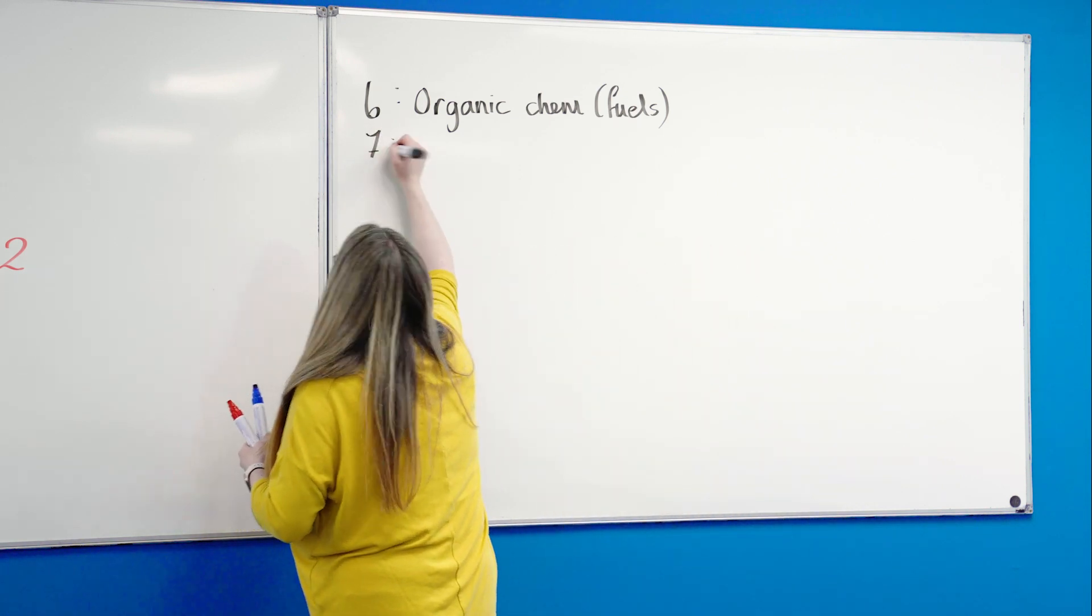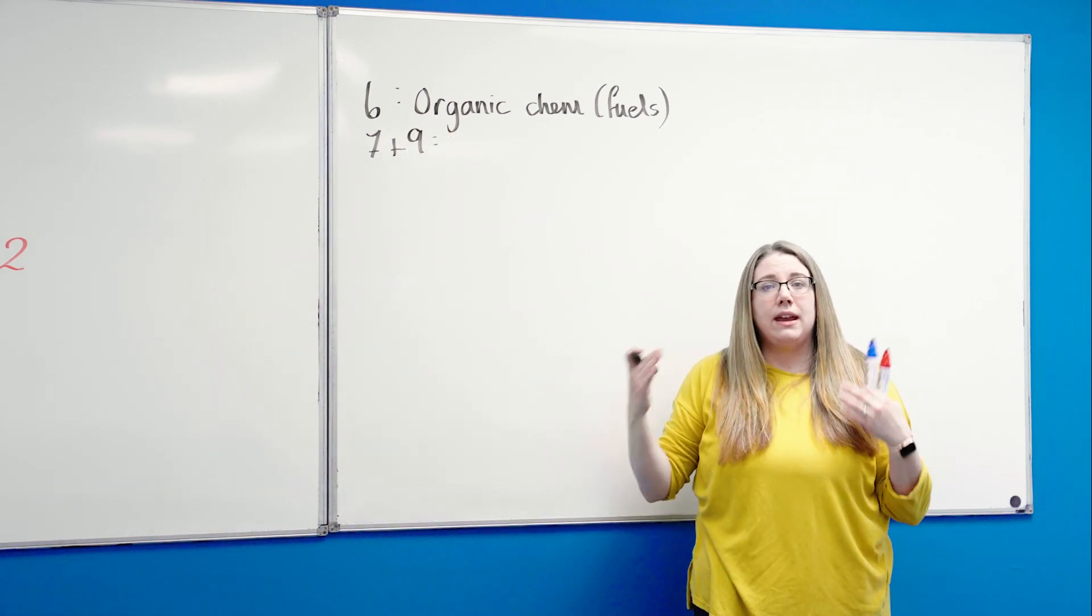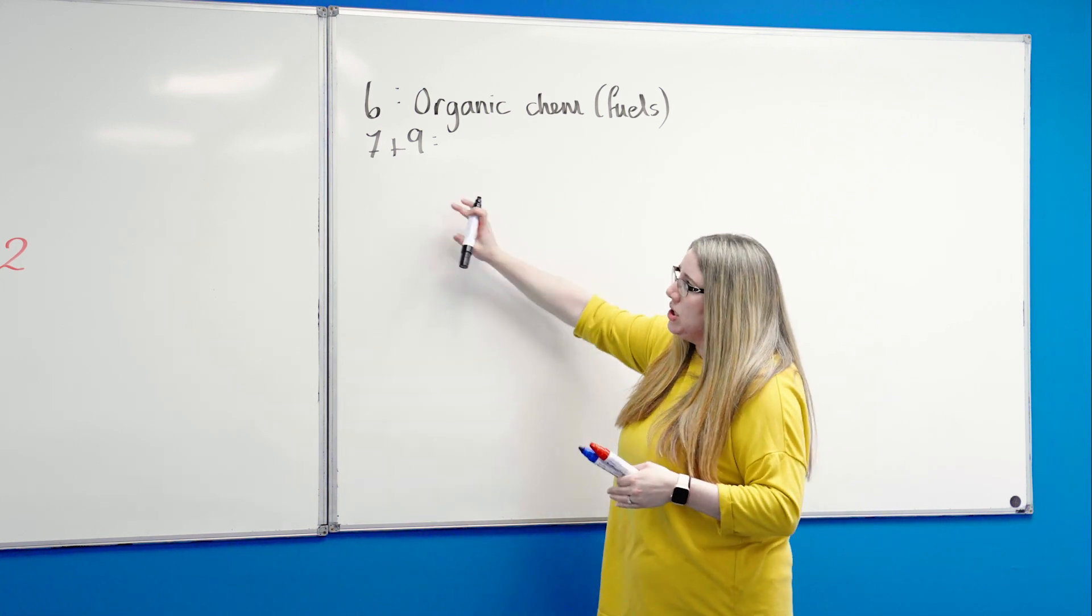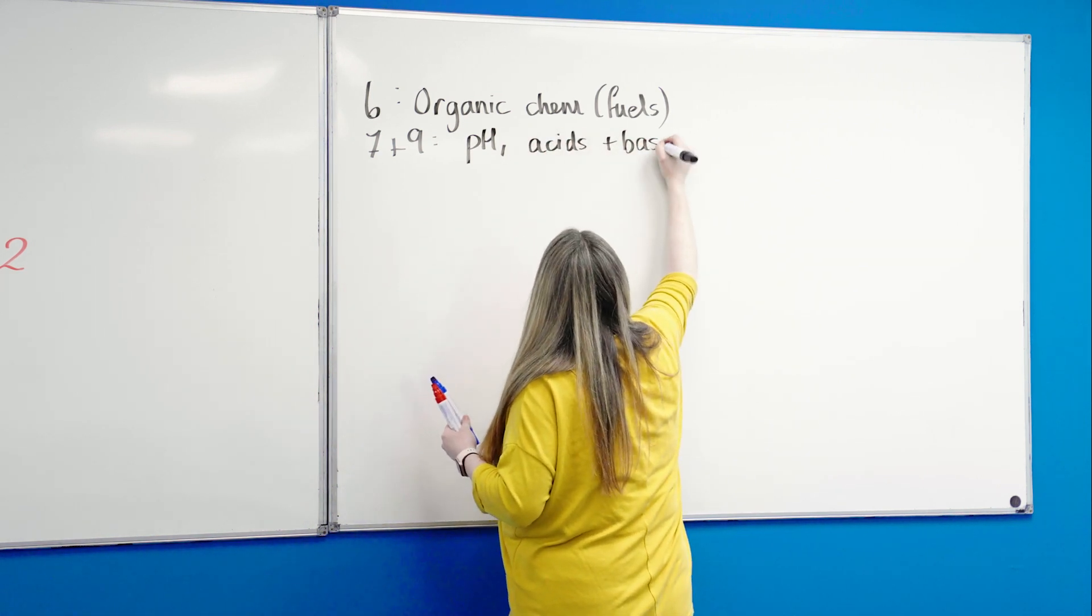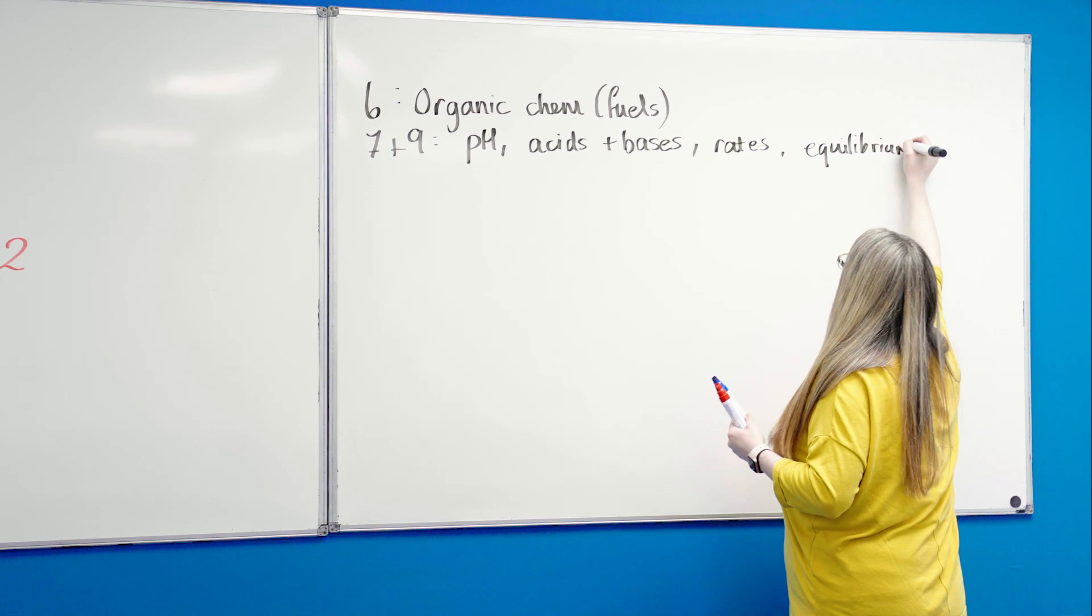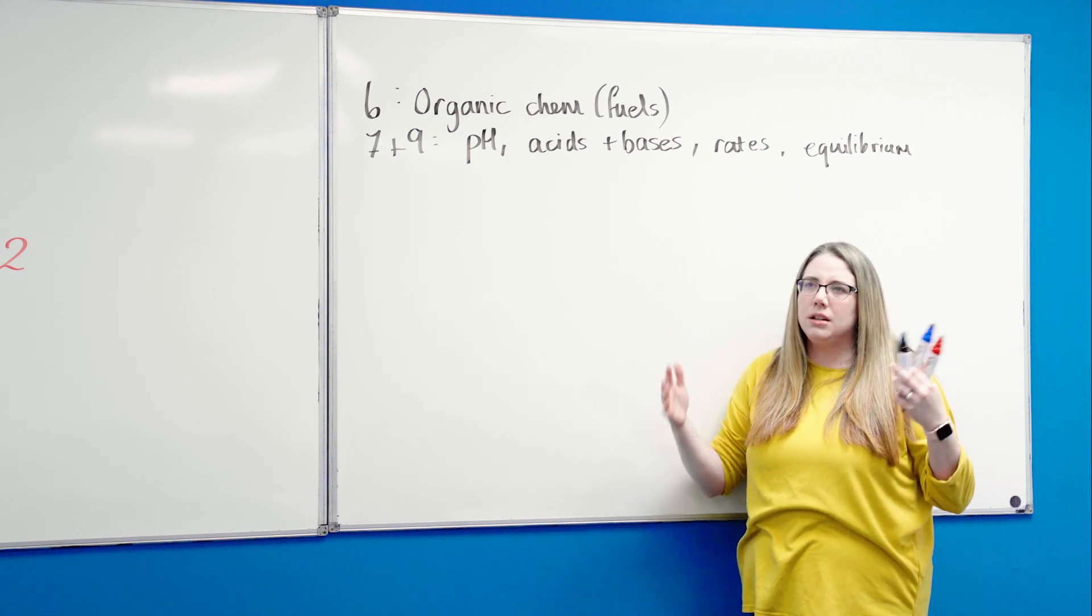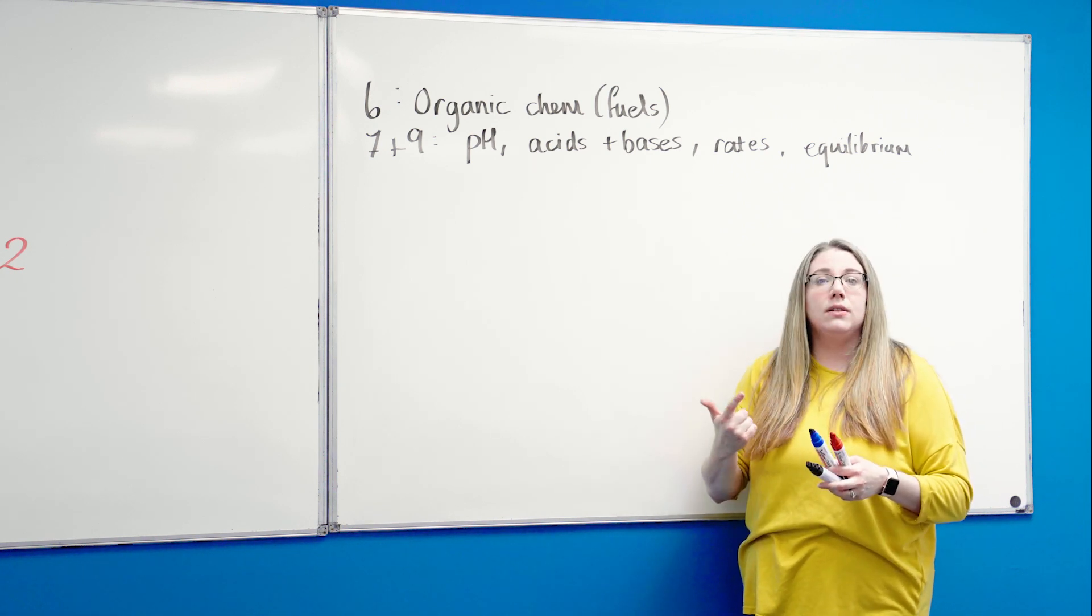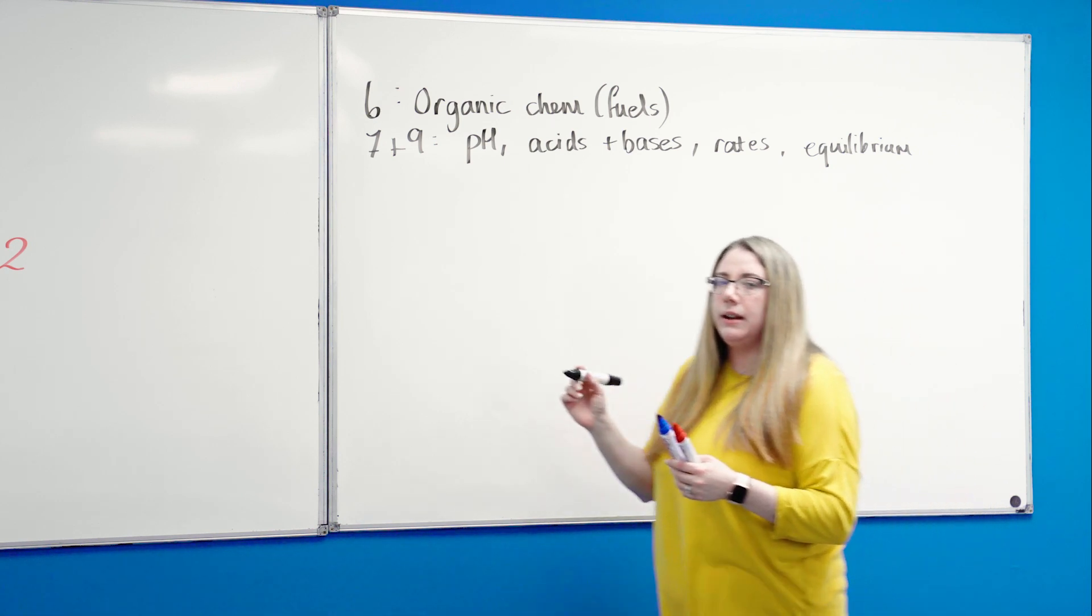Question seven. I'm going to put the question seven and nine in here together because what doesn't come up in question seven is going to come up in question nine, and they are interchangeable. It's not like pH always comes up in question seven. Question seven and nine will be pH, acids and bases, rates of reaction, and equilibrium, or some combination of those. I do recommend question seven and nine. pH and acids and bases can be a little tricky when it comes to the calculation part, but lots of practice. Get used to using your calculator for them and do the past paper questions. If you do the last 10 years, you'll be fine for those. I would recommend question seven and nine because it's easy to pick up marks in them.